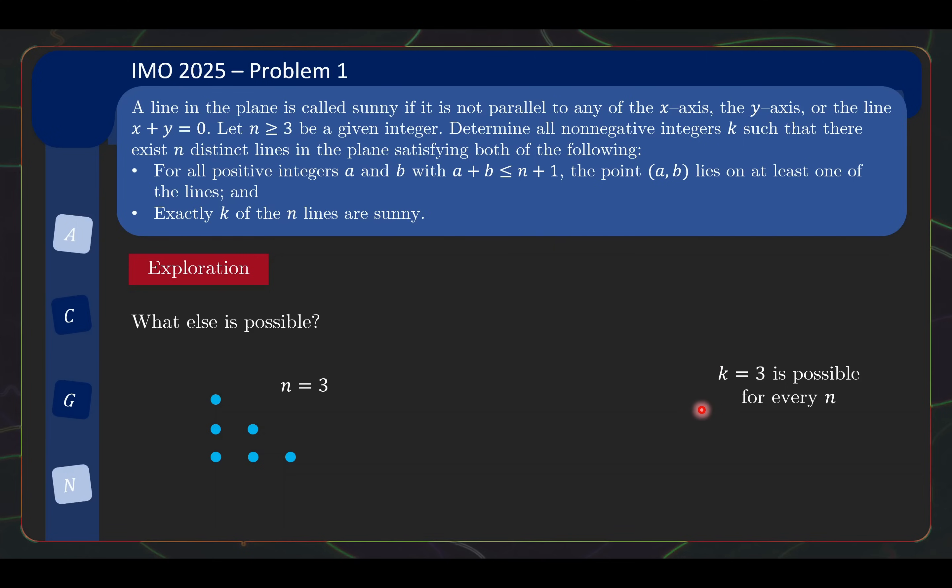Well, I've spoiled the answer for you partially here. But actually, if you try out yourself, it's also not difficult to cover your construction with three sunny lines that covers the points. And with this base construction, you can actually expand the construction to higher values of n. Because you basically use that construction in the bottom left corner. And for all the remaining dots, they all lie on slope minus 1. So you can extend that construction by adding all these non sunny lines here. So k equals 3 is possible for every n.